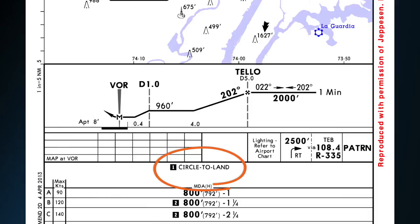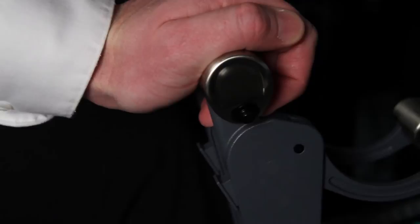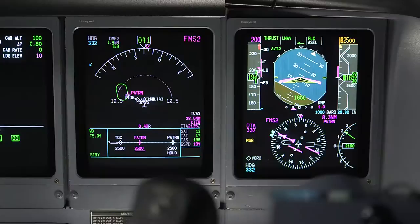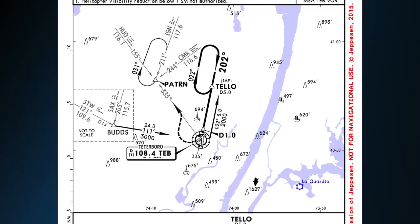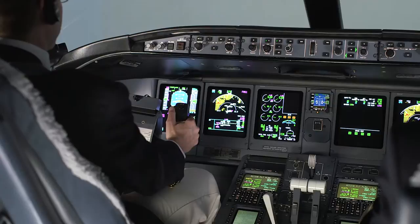The flight profile for a circling approach descends the aircraft to an MDA. The crew must manually fly the circling portion of the approach. In the event of a go-around, the missed approach procedure is enabled. The FMS provides guidance based on the shortest distance to the next fix. Depending on the aircraft's position, following FMS guidance may take the aircraft outside of the protected area of the approach, so the crew should pay close attention to the missed approach procedure while maintaining good situational awareness.